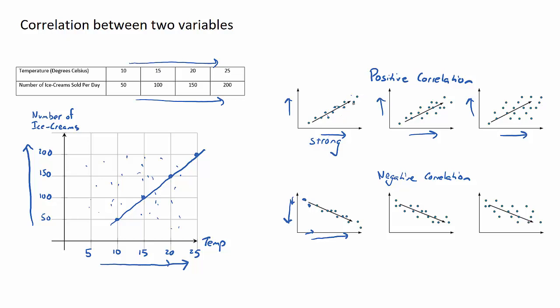For this next one, the data points aren't as close to the line of best fit. We would use the word moderate, and combining these two, this will be moderate positive correlation to describe this particular data set.